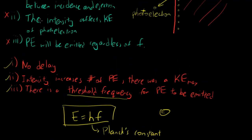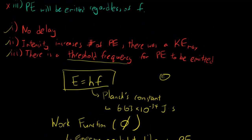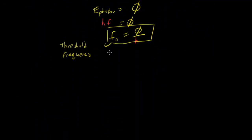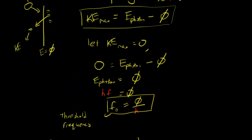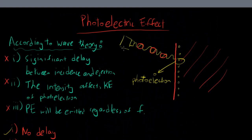What does intensity affect if it doesn't affect kinetic energy or the emission of a photoelectron? According to Einstein's photon theory of light, intensity just increases the number of photons - intensity is proportional to the number of photons. So when you increase intensity, you increase the number of photons hitting the metal. Because there are more photons, there are more photons to interact with the electrons, so each one goes to each electron. Since there are more photoelectrons now, there are more electrons they interact with.